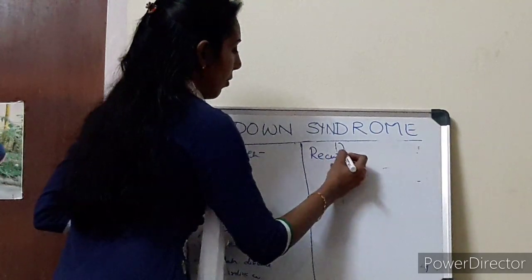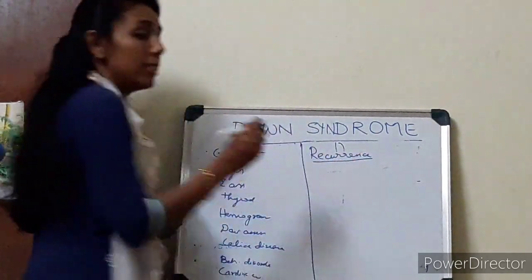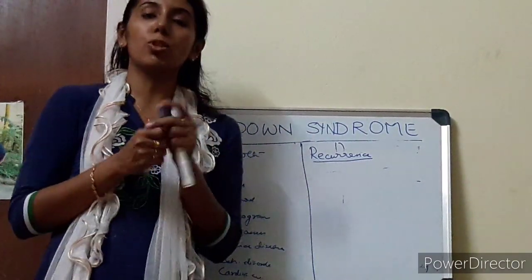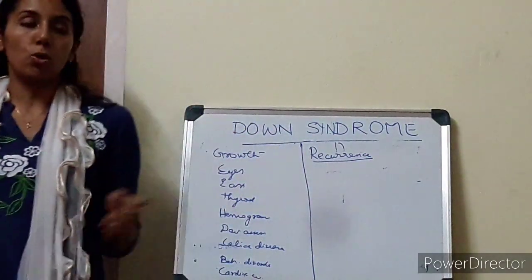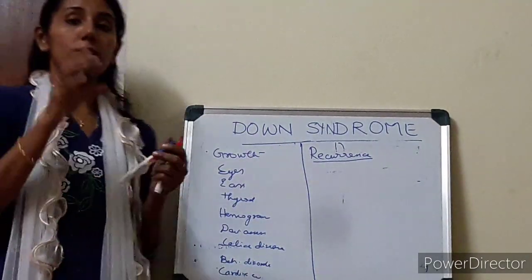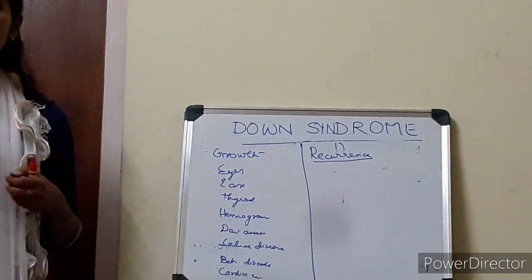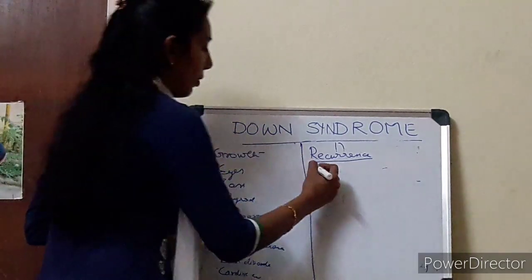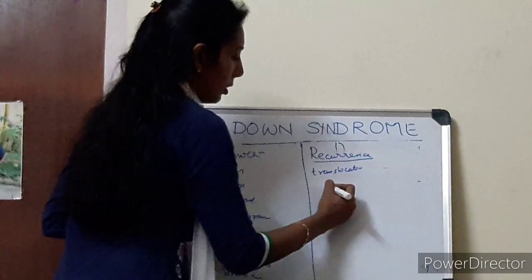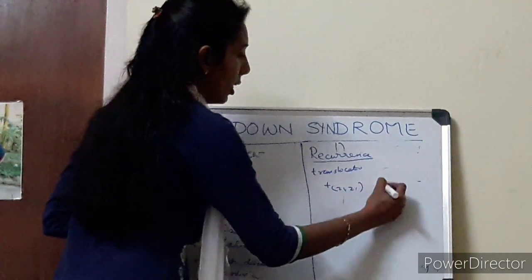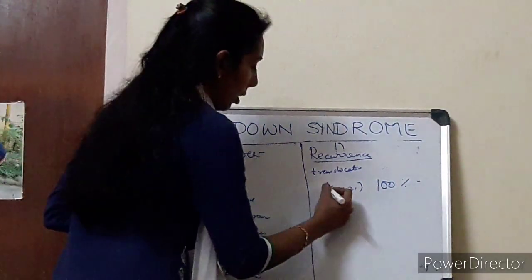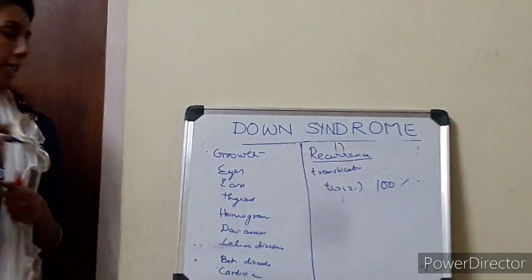Coming to recurrence — this is a very important part — because once a mother has a child with Down syndrome, the parents tend to be very anxious and they will ask you what is the risk that the next baby will have Down syndrome. We need to know what is the karyotype, exactly the genetics of the child with Down syndrome. If it is a translocation, as I already mentioned, if it is a 21-21 translocation, there is 100% risk of the next baby having the disease.